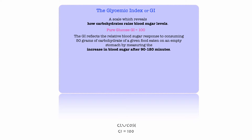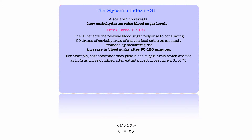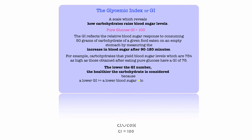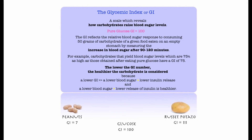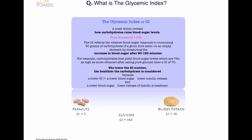So an hour and a half to two hours after you eat 50 grams of carbohydrate of a given food on an empty stomach, what happens to your blood sugar? For example, carbohydrates that yield blood sugar levels 75% as high as those obtained after eating pure glucose have a GI of 75 — it's all relative to glucose having a GI of 100. The lower the GI number, the healthier the carbohydrate is considered, because a lower GI means lower blood sugar and lower insulin release. For perspective, peanuts are at the low end with a GI of 7, and a russet potato has a GI of 111 — even higher than glucose — in terms of its effect on blood sugar levels.